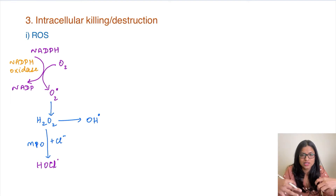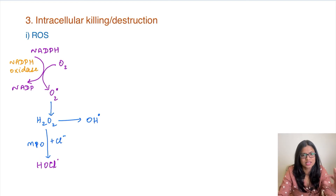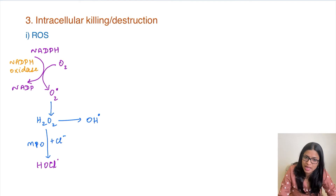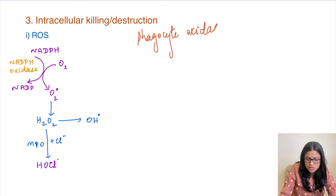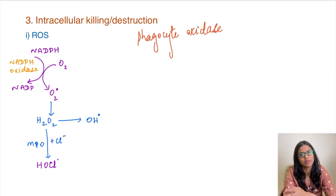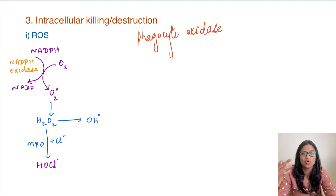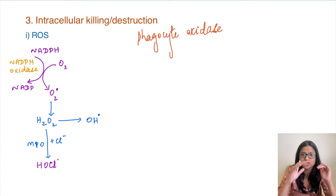The next step is intracellular killing inside the phagolysosome, achieved by three mechanisms: reactive oxygen species (free radicals), nitric oxide, and lysosomal enzymes. For reactive oxygen species, an enzyme called NADPH oxidase — also called phagocyte oxidase — is involved. It is a multi-component enzyme, with parts in the plasma membrane and parts in the cytoplasm. When macrophages or neutrophils get activated, NADPH oxidase assembles into a functional enzyme on the surface of the phagolysosome.